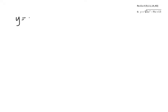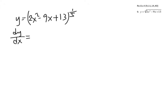I will write it a simpler way. First, rewrite the question to the power of 1 over 5. Then differentiate: bring down the power outside first, so it should be 1 over 5, then 2x squared minus 9x plus 13, to the power of negative 4 over 5.